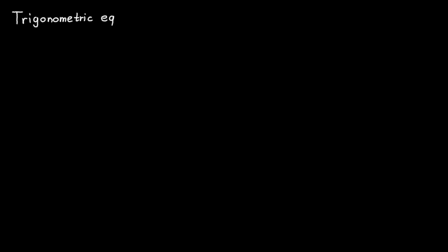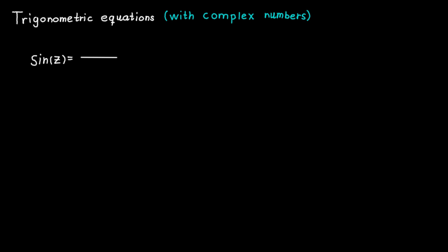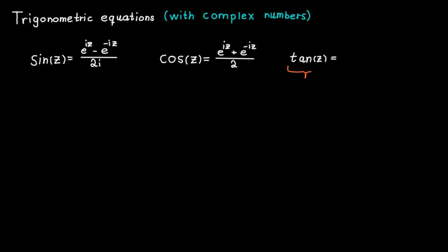The first step to solve a trigonometric equation with complex numbers is to remember how the trigonometric functions are defined. Sine is equal to e to the ic minus e to the minus ic, divided by 2i. Cosine is equal to e to the ic plus e to the minus ic, divided by 2. And tangent is simply sine divided by cosine.